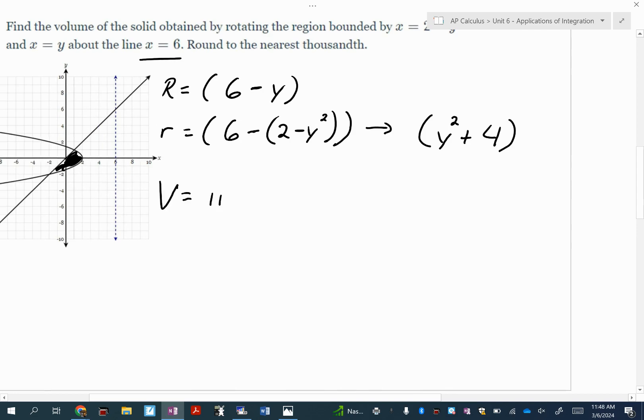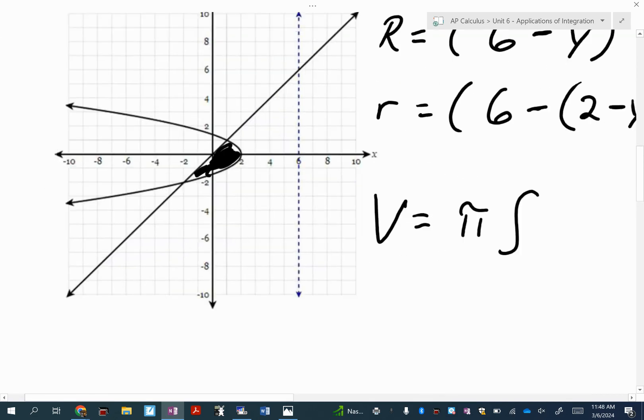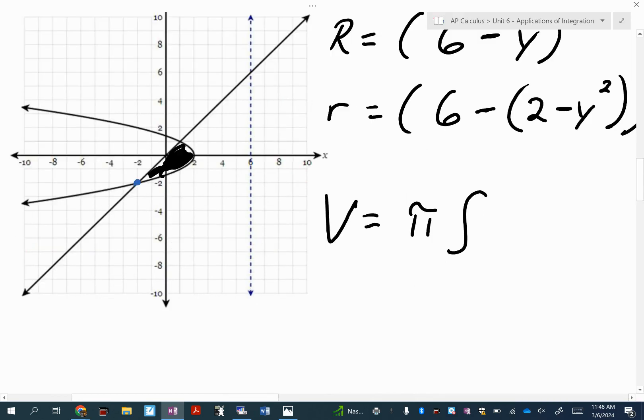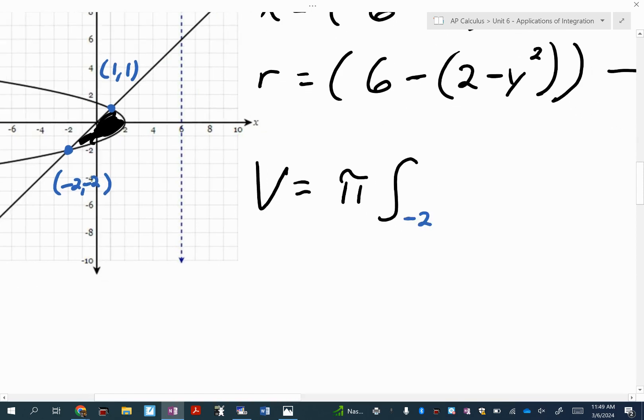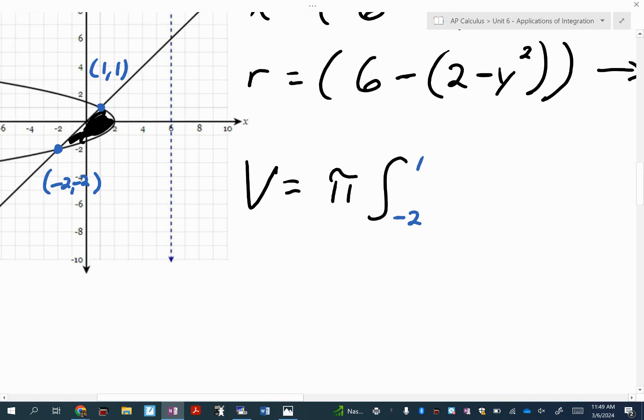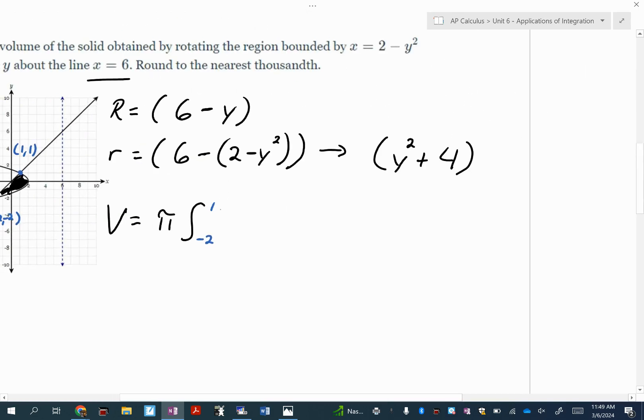All right. So doing the volume, I have pi times the integral of. Let's zoom in here and see if we can find our limits of integration. So this is negative two, negative two. This one is one comma one. That shouldn't surprise you with the function being, or the line being X equals Y. So what are my, did I miss a negative there? There you go. Sorry about that. What's our limits of integration? Negative two to positive one. All right. Filling the rest in. My large R is six minus Y. Don't forget to square that. Minus Y squared plus four. Don't forget to square that. And then don't forget the DY part.